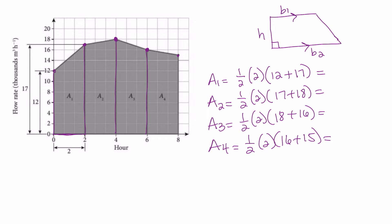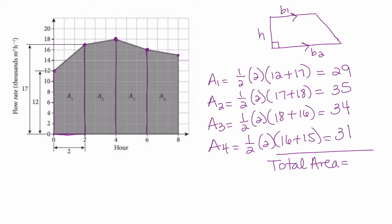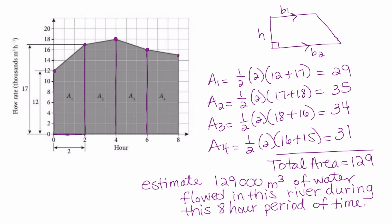I went ahead and put these all into my calculator and got the area for each individual trapezoid. Now I'm going to add up all four areas together, and that gives me 129. This means we have estimated that 129,000 cubic meters of water flowed in the river during this eight-hour period. Remember, this is an estimate — an approximation. We don't know exactly how much was flowing because we only measured every two hours, so this is the best answer we have.